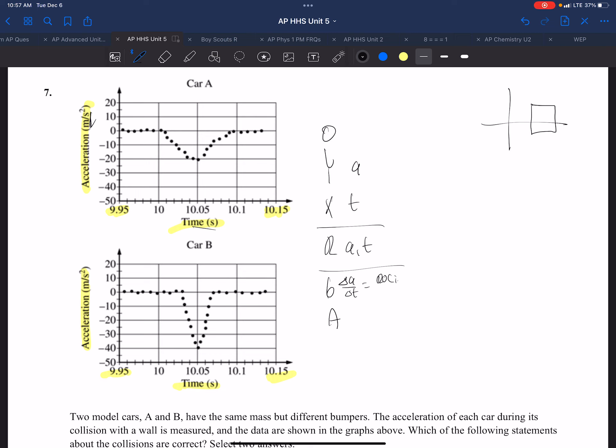And the area is a delta t, which is the change in velocity. Meters per second squared times seconds is meters per second. That gives us the change in velocity.